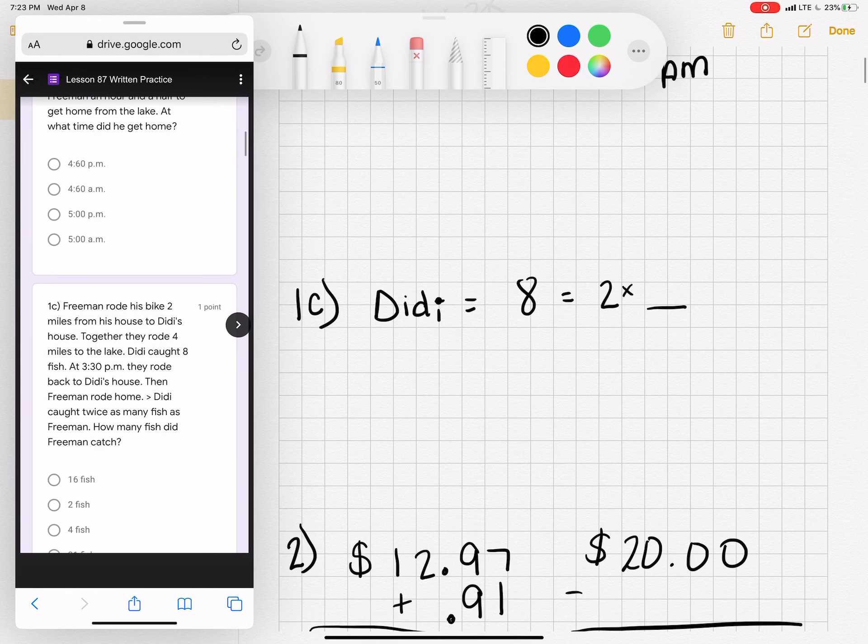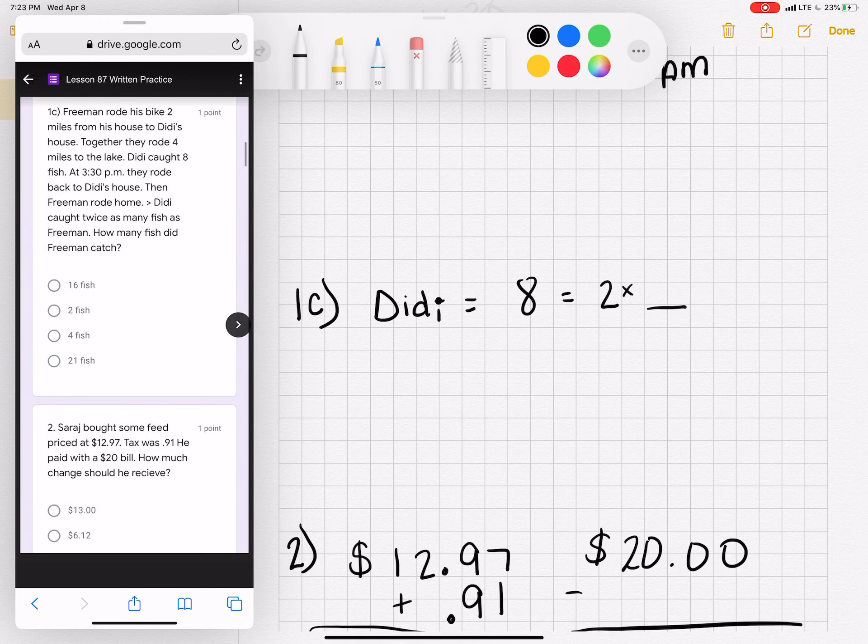Part C. Dee Dee caught twice as many fish as Freeman. How many fish did Freeman catch? So Dee Dee caught eight. And she caught twice as many as Freeman. So two times what is eight? The answer to that is four. Freeman caught four fish.